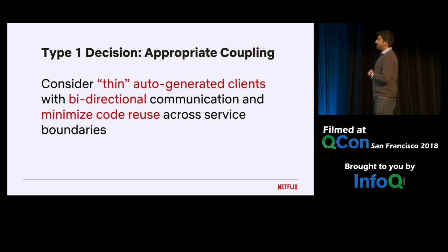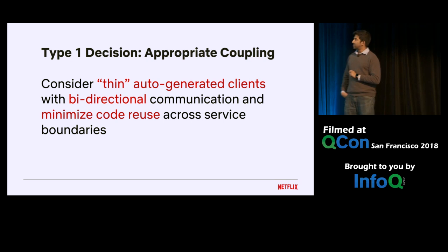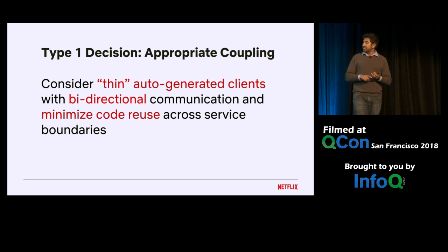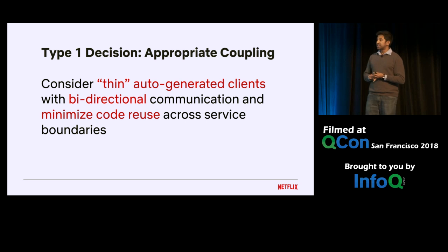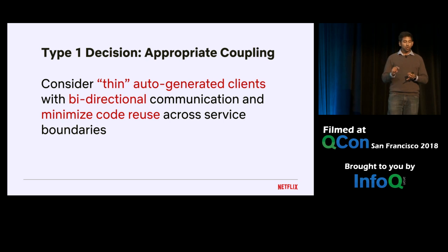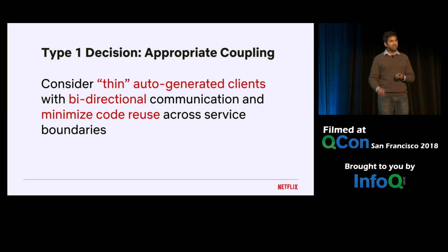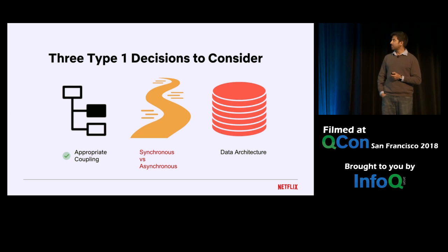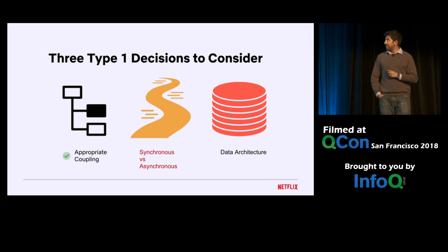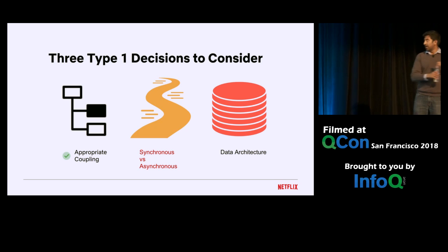So the first type one decision we made around appropriate coupling is: consider thin auto-generated clients with bi-directional communication, and minimize code reuse across service boundaries.